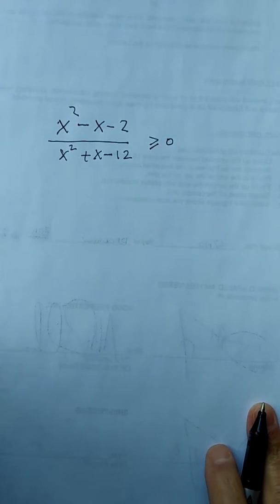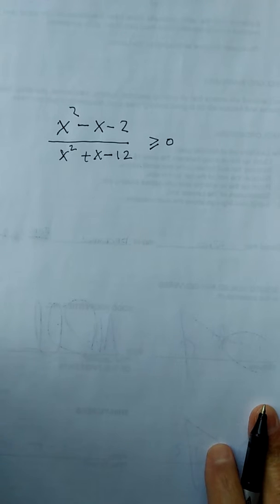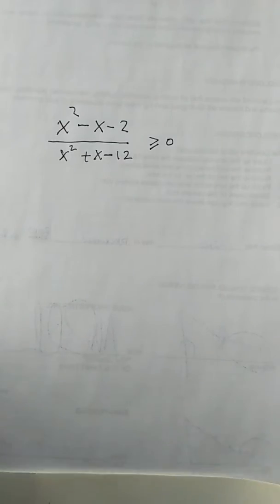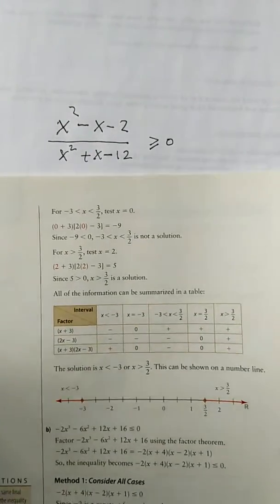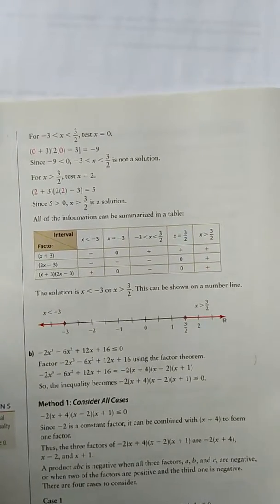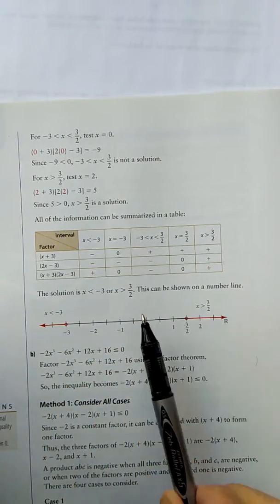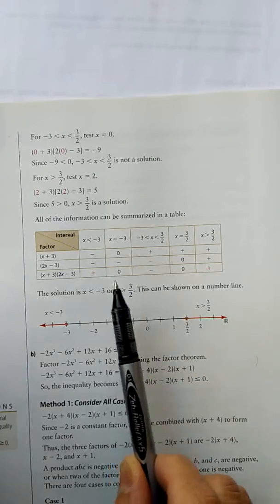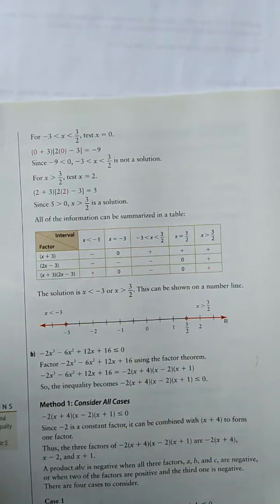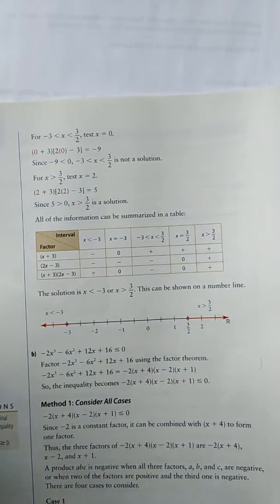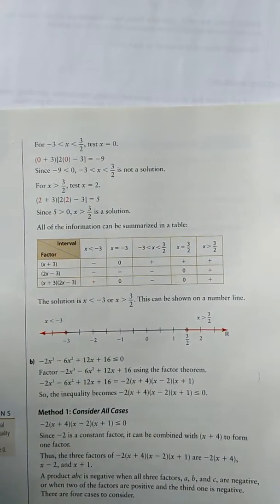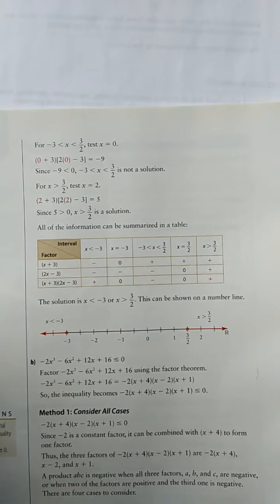If you go to the textbook, it probably uses a table called an interval table. From the interval table, you can figure out your answer — the x value is between what and what, and whether it's larger than 0 or smaller than 0. But doing the interval table takes some time.